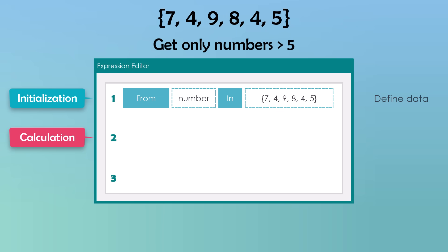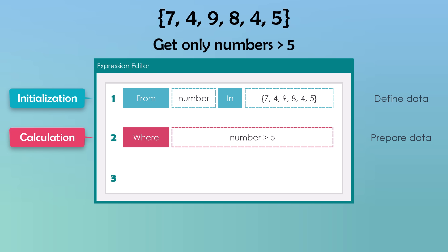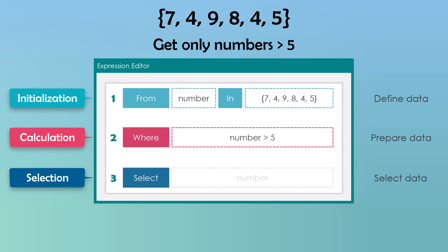Now let's move on to the calculation. In this part we can prepare the data, like filtering, grouping, ordering, or something else. In my case I want to filter the array, so I use the where clause. I will set the clause where, then write the expression to filter the data — I want to get only the numbers which are greater than 5. I use the variable 'number', which represents the numbers inside the array, to write the expression. Now we still need to select the data using the select clause, then the variable 'number', to select only the numbers greater than 5.